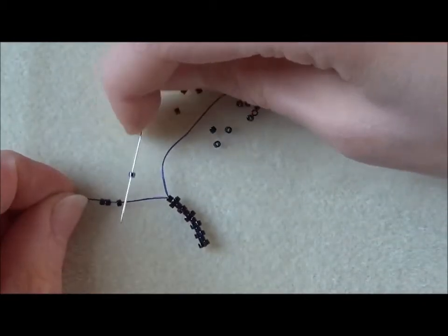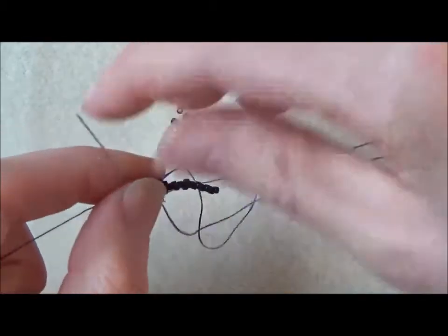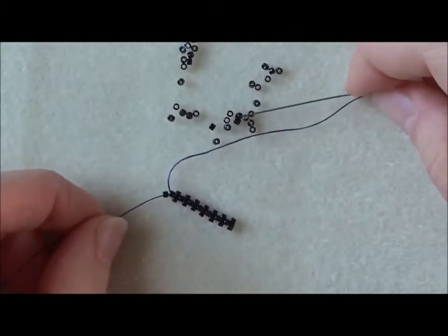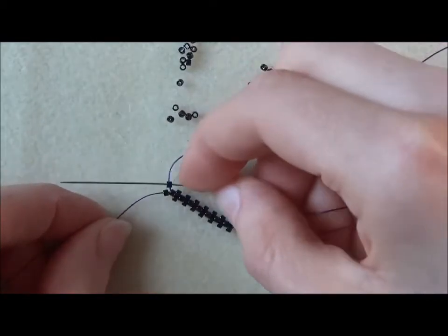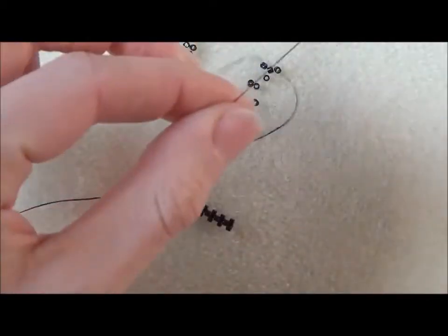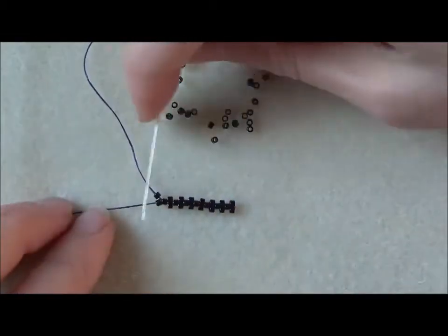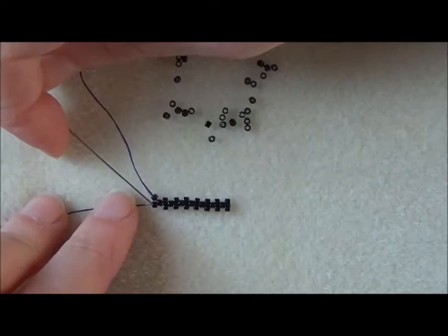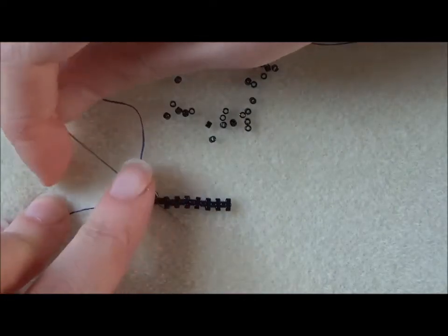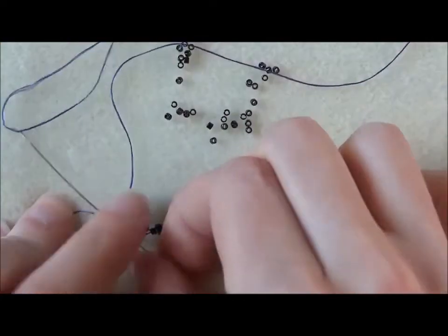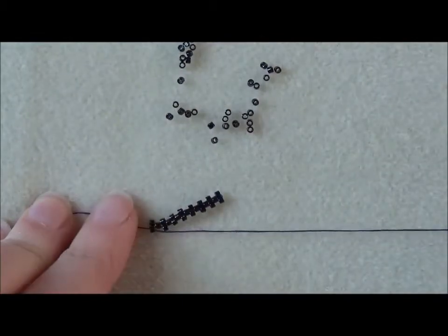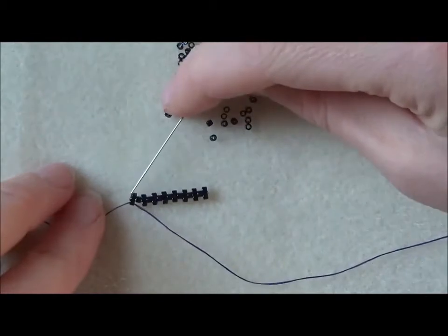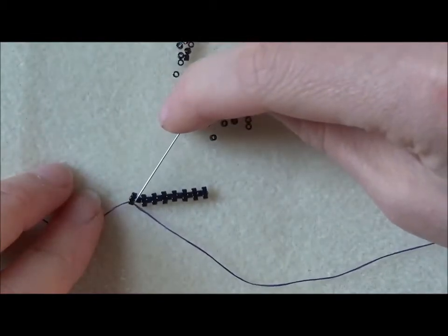At the end there, we still need to pick up a new bead. It's just flopping about, so to anchor that in place we actually want to go back on ourselves. I'm going to go through that first bead there. By doing that little bit at the end, it's got that bead in place and I'm now in the right position to start beading.